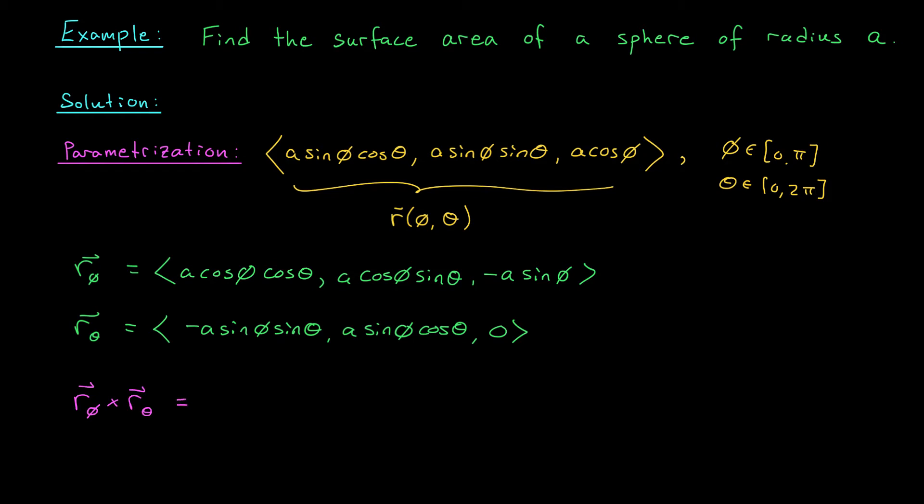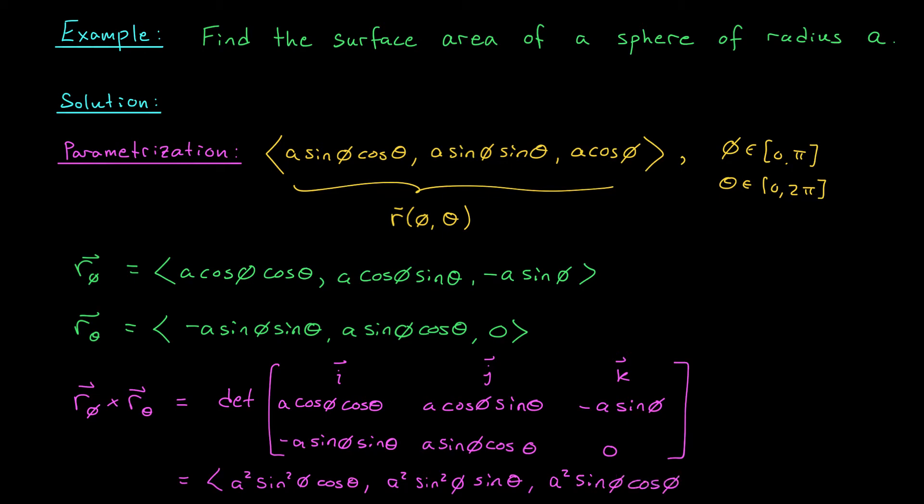The cross product is given by the determinant of this ugly looking matrix. I've just put i, j, k in the top row and our two vectors in the second and third row. Now, if you evaluate this determinant and clean it up with some basic trig identities, you should get a squared sine squared phi cos theta, a squared sine squared phi sine theta, and a squared sine phi cos phi. Try it as an exercise. On the next slide, we're going to take the norm of this vector and integrate.